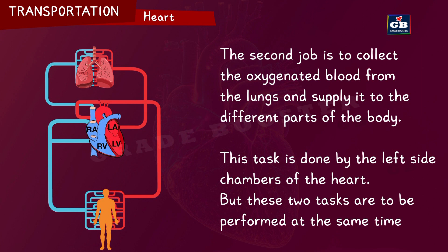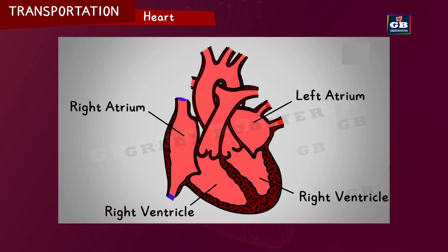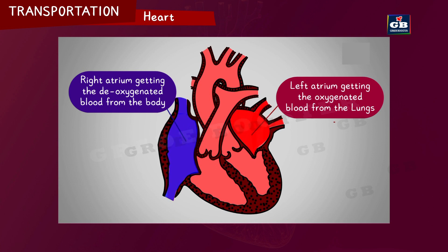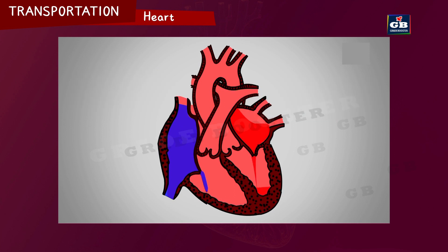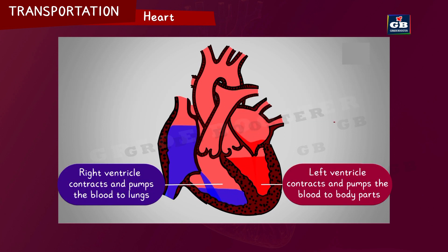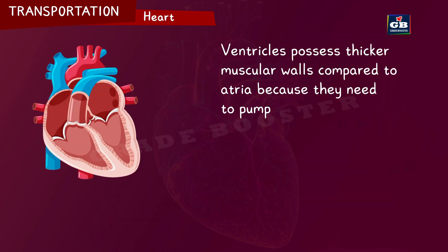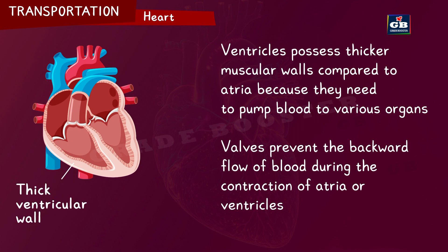Both these tasks are performed at the same time. First, the left atrium and right atrium get relaxed or dilated. Then the left atrium receives oxygenated blood from the lungs, and the right atrium receives deoxygenated blood from the body parts. Both chambers then contract and pump blood into the bottom chambers. The left ventricle contracts and sends oxygenated blood to the body parts, while the right ventricle pumps deoxygenated blood to the lungs. Ventricles possess thicker muscular walls compared to atria because they need to pump blood to various organs.